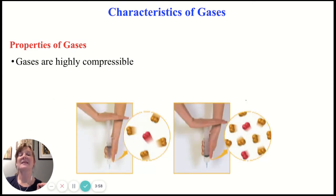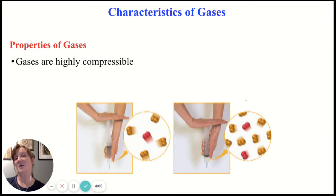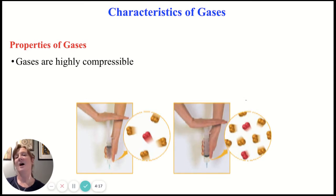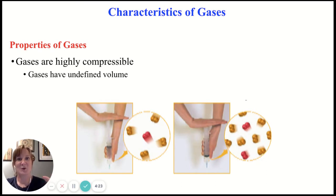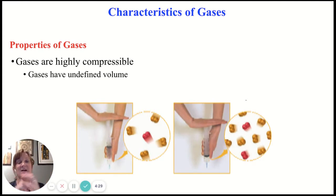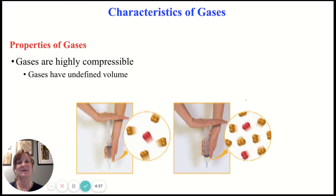Another property of gas — and this is one of the properties that makes gases different from liquids — is that gases are highly compressible. Liquids and solids are not compressible. Gases we can compress. If you have a balloon, you can push on it, feel that pressure increase, and it is possible to compress that balloon and kind of smush it and manipulate it. That's how we get balloon animals because of this compressibility of gases.